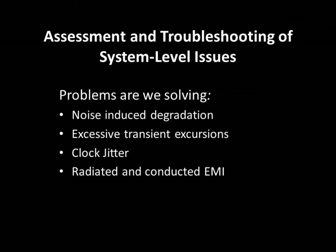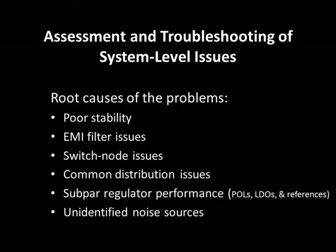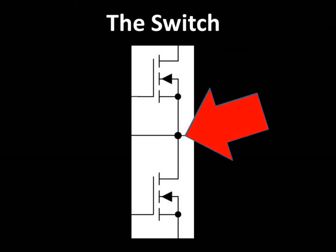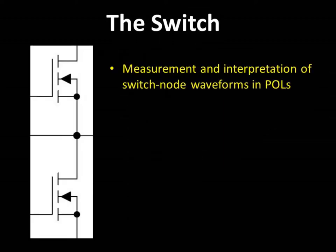In our business, we are frequently called on to assess and troubleshoot system level issues, many of which are related to the power distribution network. The causes of customer issues are generally covered in a very short list. At AEI Systems, we frequently see system and power converter issues related to a converter's switching characteristics, which are most easily observed at the switching node. So in this video, we'll discuss the measurement and interpretation of switch node waveforms as observed in point-of-load regulators, or POLs.